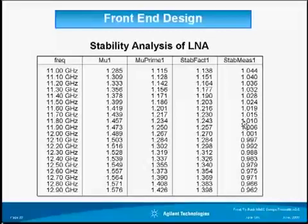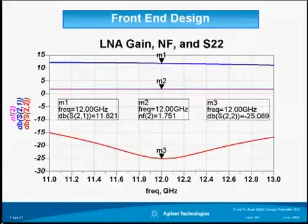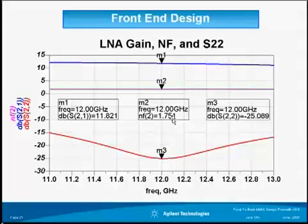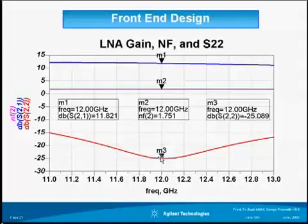All of these are required for an unconditionally stable amplifier. The simulation results for the first-cut LNA show: gain of 11.8 dB (spec: 11 dB — met), noise figure of 1.75 dB (spec: 1.85 dB — met), and S22 of -25 dB (spec: -15 dB or lower — met). The results look very good.